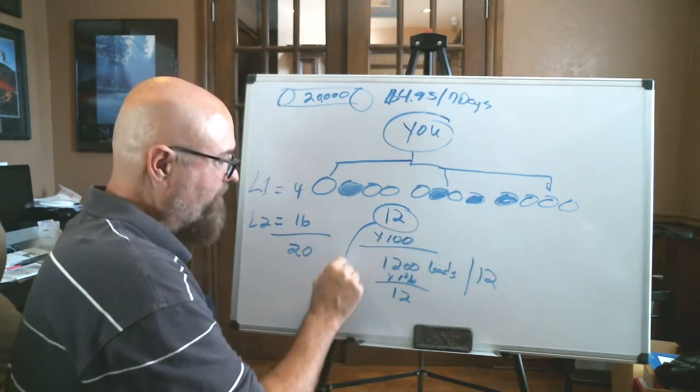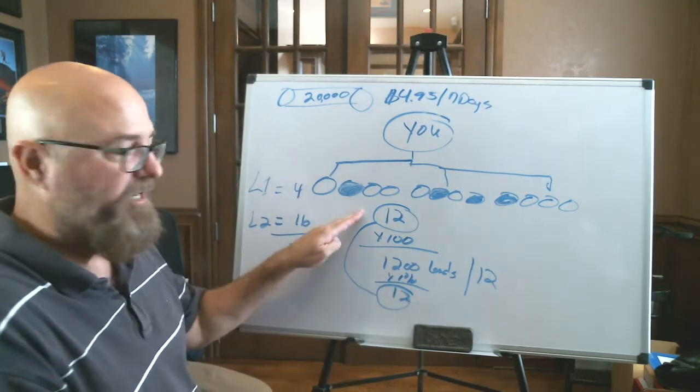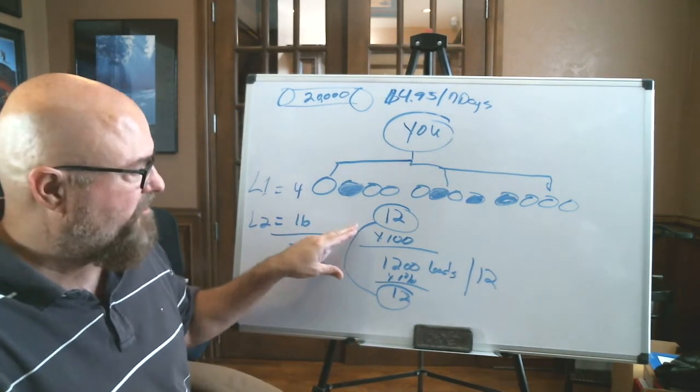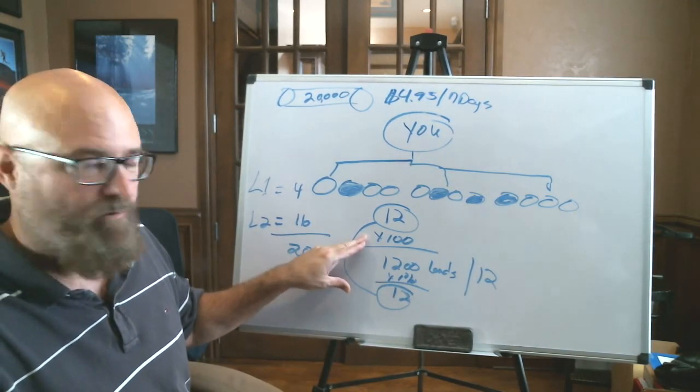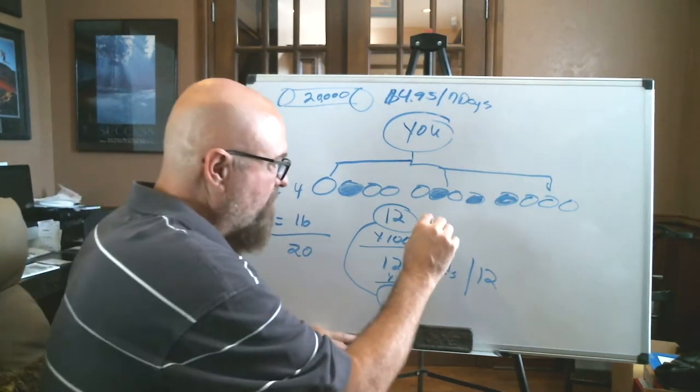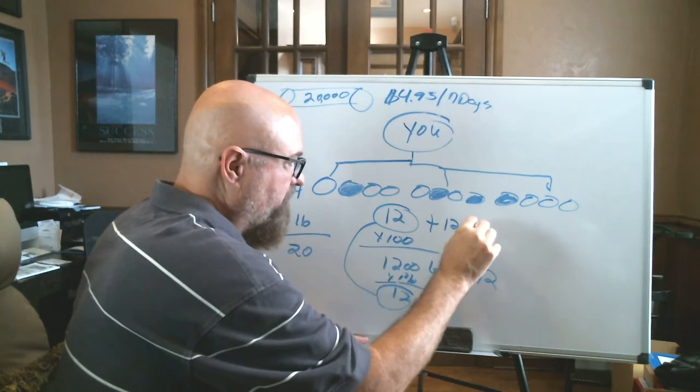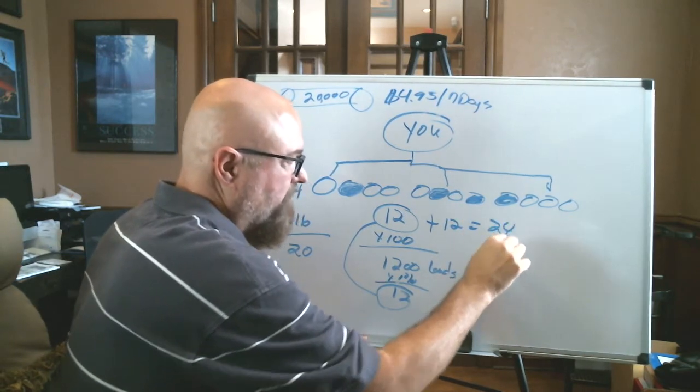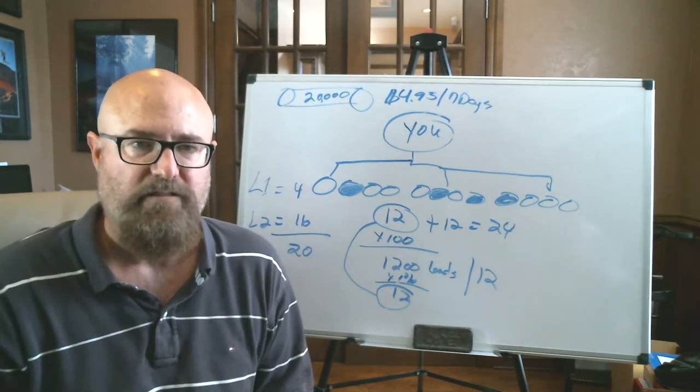So if I'm signing up, I got 1200 leads times 1% conversion rate, that's 12. Look what my team just did. So if I've got 12 people in my primary business, and they're all calling 100 leads a month, and we're getting a 1% conversion rate, we're getting 12 people, we've just doubled my group. You see how duplication works with profit leads.